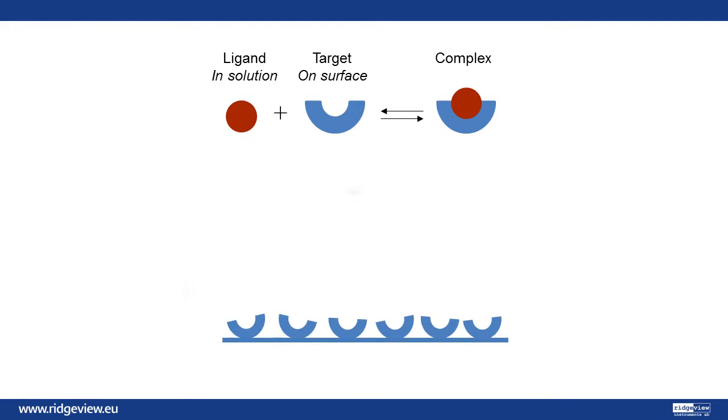Imagine two molecules: a target that's anchored to a surface and a ligand kept in solution. These may interact with each other, forming a complex. The interaction is reversible, meaning that the complex may fall apart, causing the ligand and target to be free once again.